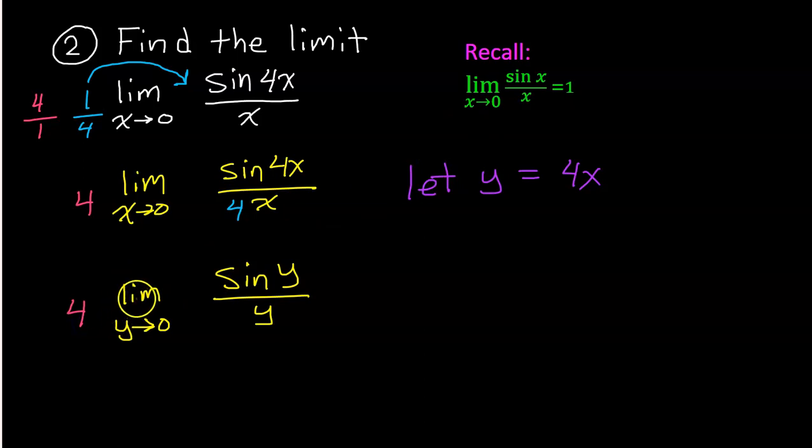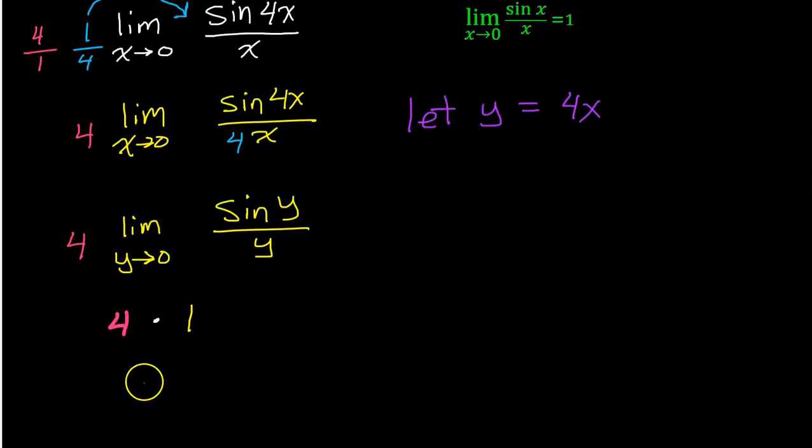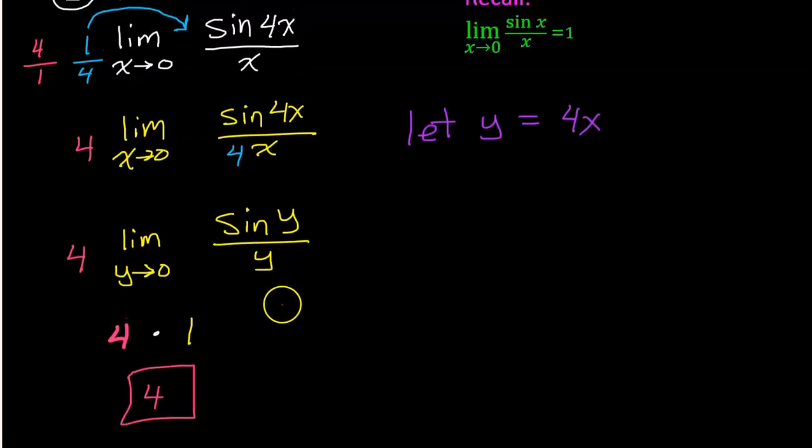But we know that the limit of sin(y) over y as y approaches 0 is 1. That's the same fact up here that we have memorized just with a different variable. So everything here in yellow is going to become 1. And then we still have the 4 out front, and that is just multiplying. So we just have 4 times 1, which of course is 4. And that is the final answer. So the limit of sin(4x) over x as x approaches 0 is simply 4.